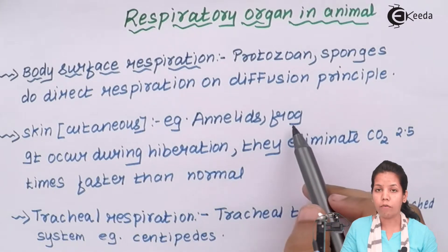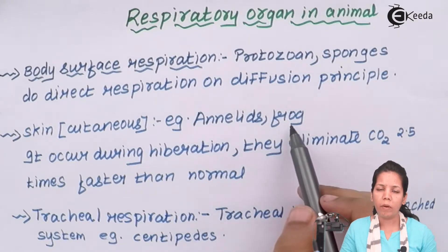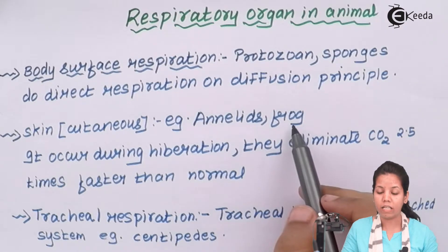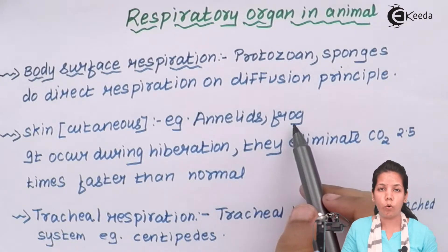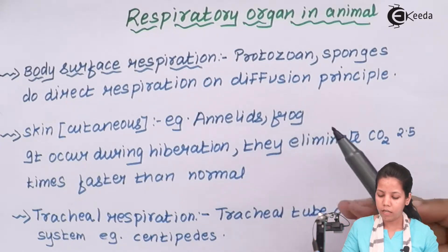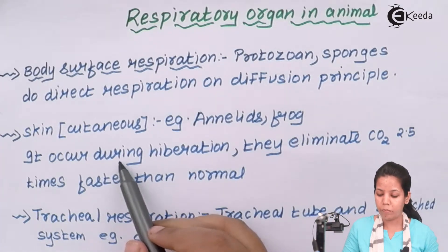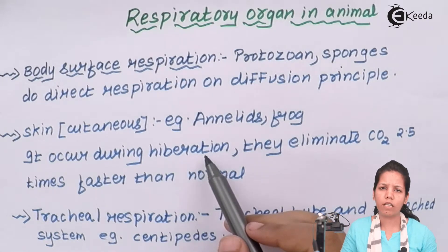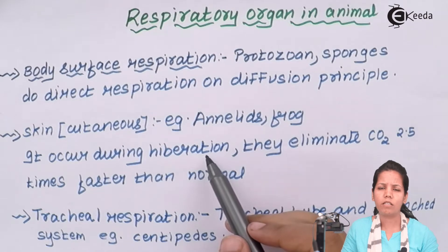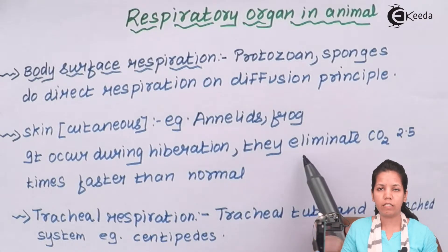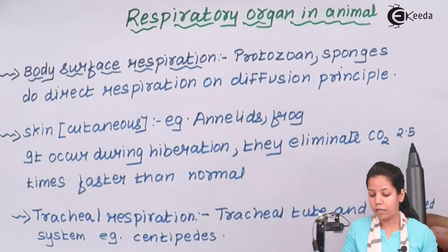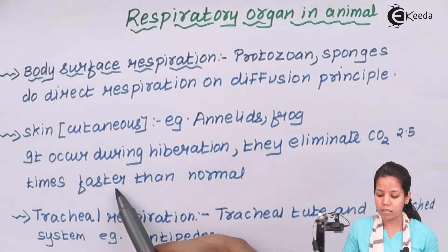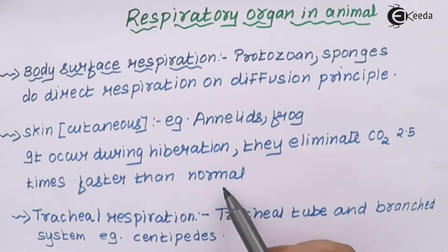The second type is skin or cutaneous respiration. Animals like frogs and annelids — frogs being amphibians — whenever they are inside water, they do respiration with the help of their skin. Inside water, lungs won't help them to respire. But whenever frogs are outside, that is on land, they respire with the help of their lungs. It is said that during the process of hibernation — a process during which the metabolism, anabolism, and catabolism in an animal's cells slows down or halts — frogs eliminate carbon dioxide 2.5 times faster than normal respiration through cutaneous respiration, basically inside water.